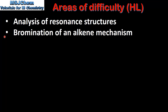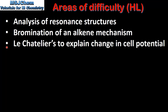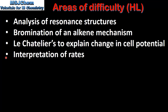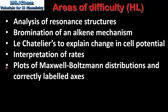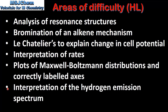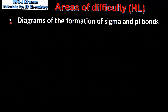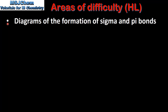Next is bromination of an alkene mechanism, Le Chatelier's principle to explain change in cell potential, interpretation of rates, plots of Maxwell-Boltzmann distributions and correctly labelled axes, and the interpretation of the hydrogen emission spectrum. Next we have diagrams of the formation of sigma and pi bonds.